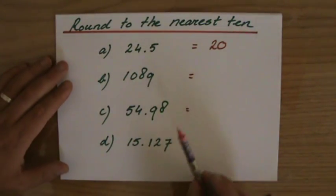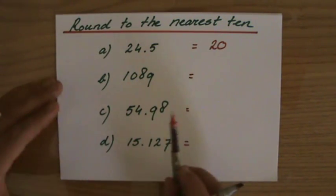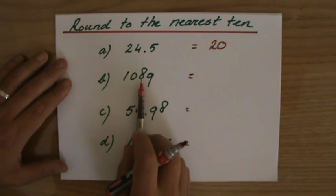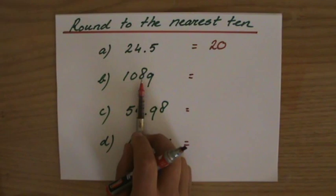1089 to the nearest ten. I'm gonna identify what my tens are. That is the 8. Now I have 18, and 8 tens.